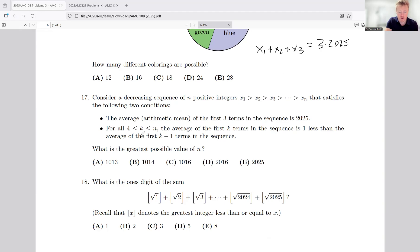Now for all k that's greater than or equal to four, the average of the first k terms in the sequence is one less than the average of the first k minus one. Let's let k equal four to make sense of what they're saying. So the average of the first four terms in the sequence would be three times 2025 plus x sub 4 over 4.